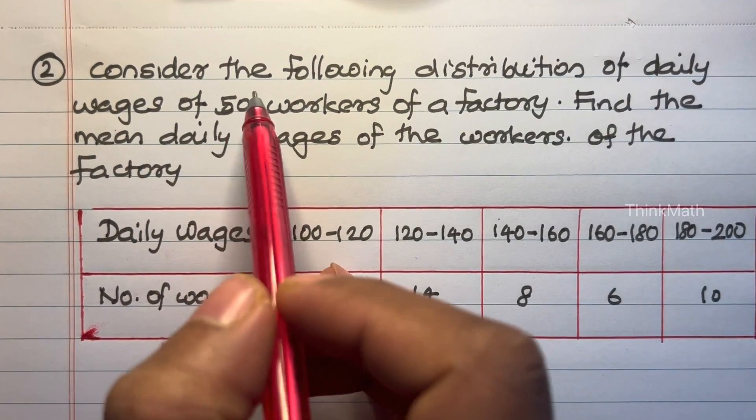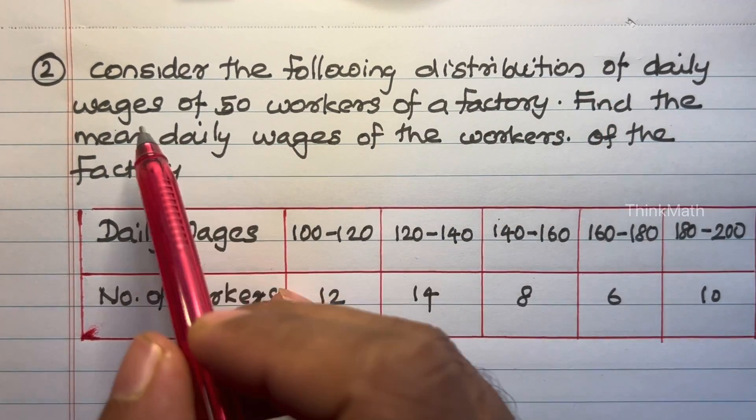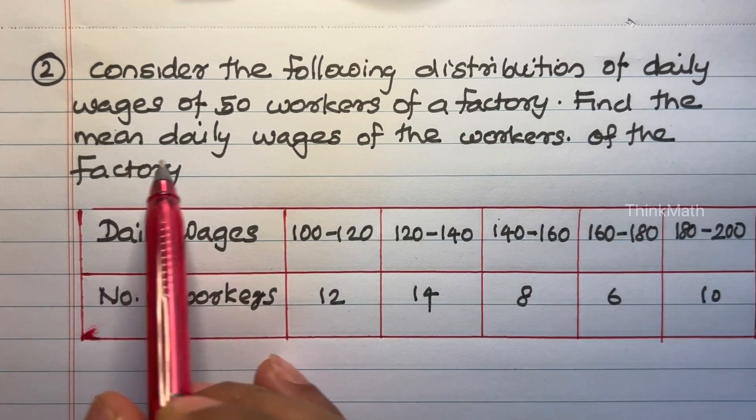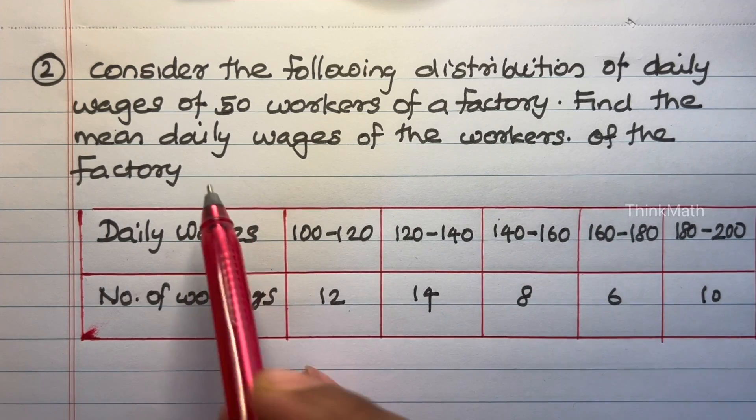Question number 2. Consider the following distribution of daily wages of 50 workers of a factory. Find the mean daily wages of the workers of the factory.